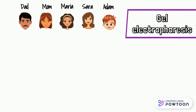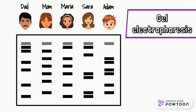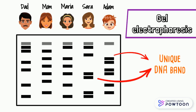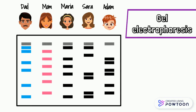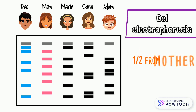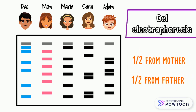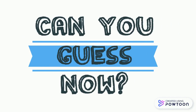So DNA samples were taken from each one of them and gel electrophoresis was performed. As a result, you can see that series of bands are migrating from individual lanes, and each child possesses their own unique DNA bands. First, let us color code the bands from mother and father as pink and blue respectively. As we know, the children will possess half of the DNA from the mother and the other half from their father.